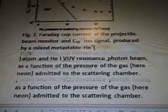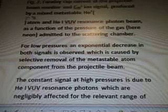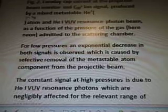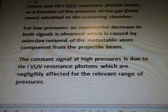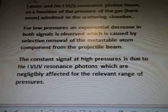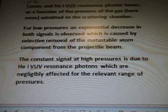Here's a diagram that's really blurry. Figure 2, Faraday cup current at the projectile beam monitor and C60 plus ion signal produced by a mixed metastable HE star (2L3S in tiny print) atom and HE VUV resonance photon beam as a function of the pressure of the gas, here neon, emitted to the scattering chamber. For low pressures an exponential decrease in both signals is observed, which is caused by selective removal of the metastable atom component from the projectile beam.